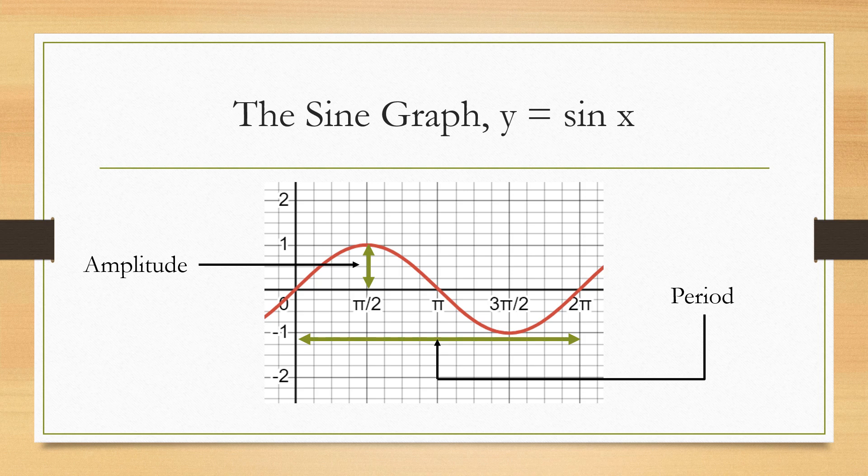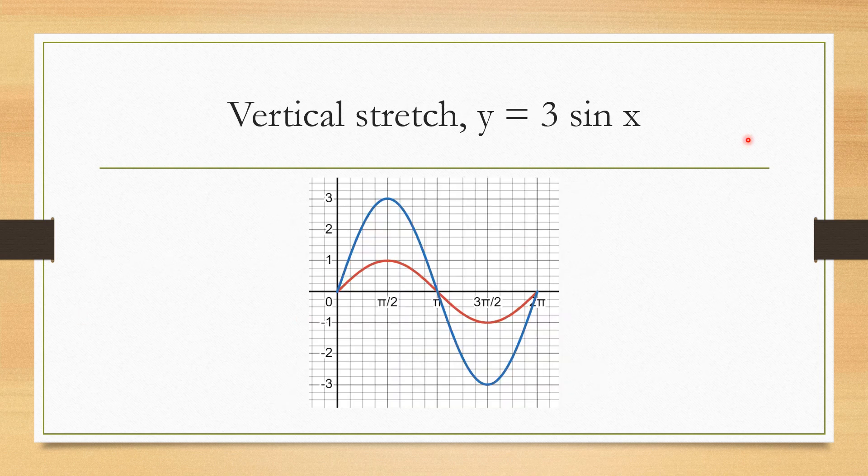So let's see how it transforms as we change the numbers in the equation. The first is what happens when we have 3 in front of the sine x. You can see the blue graph is y equals 3 sine x. The red graph is the original y equals sine x graph.